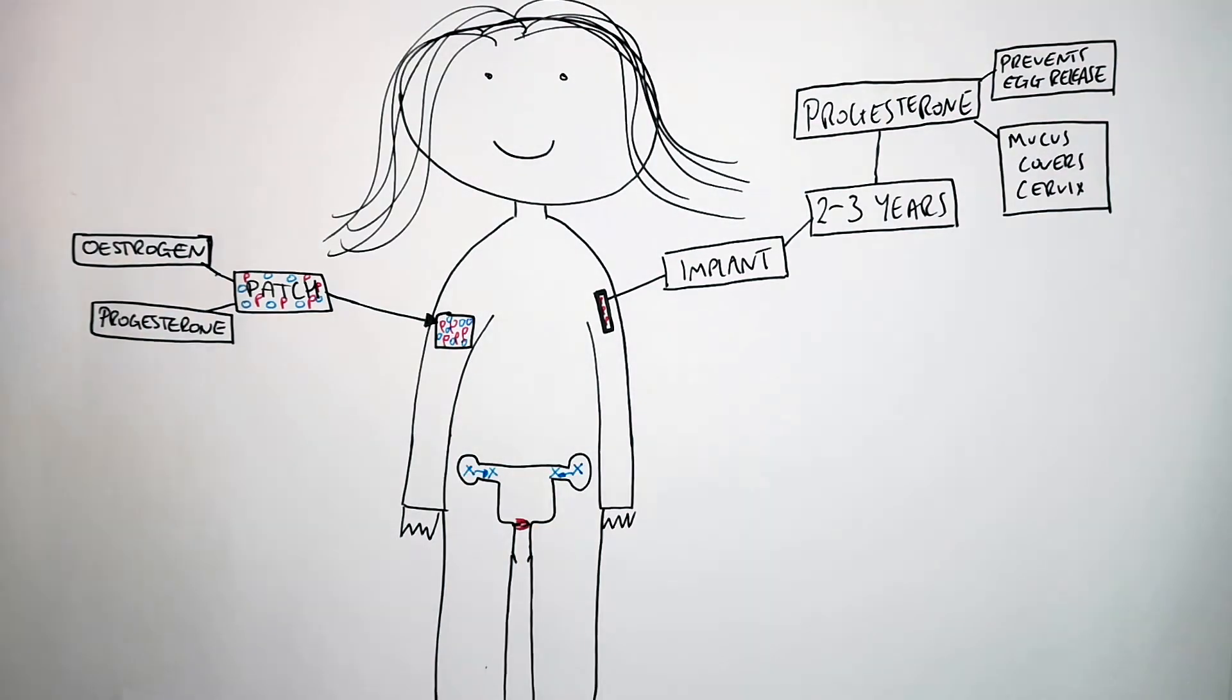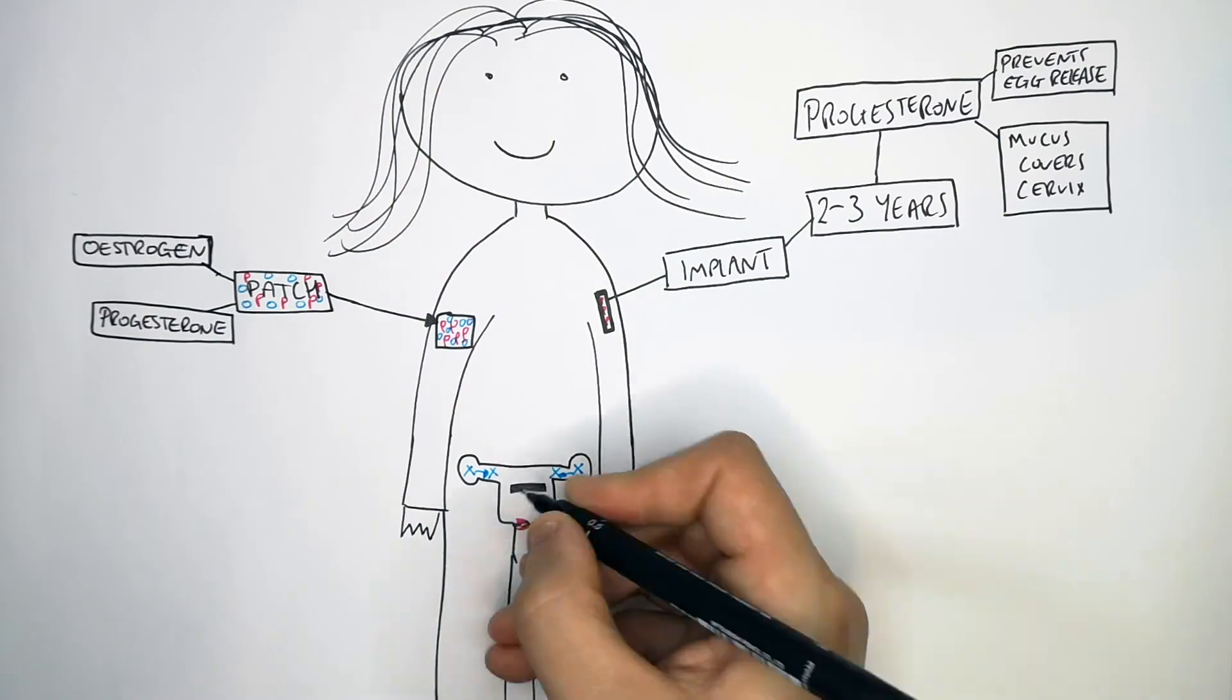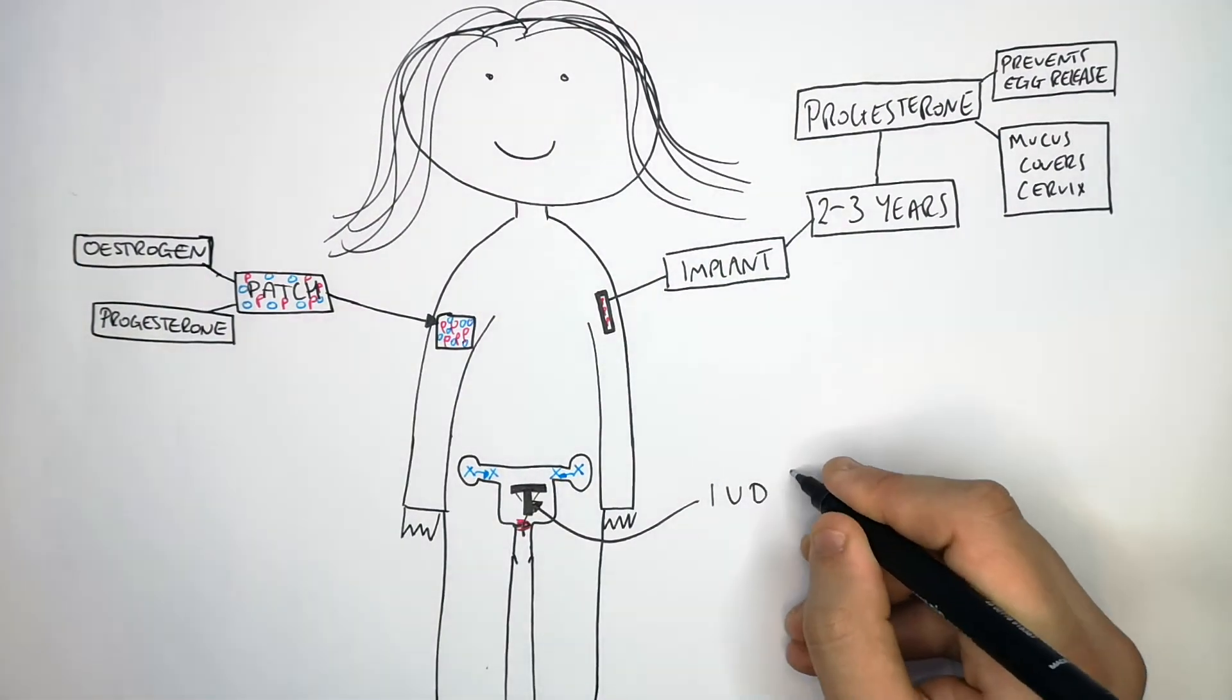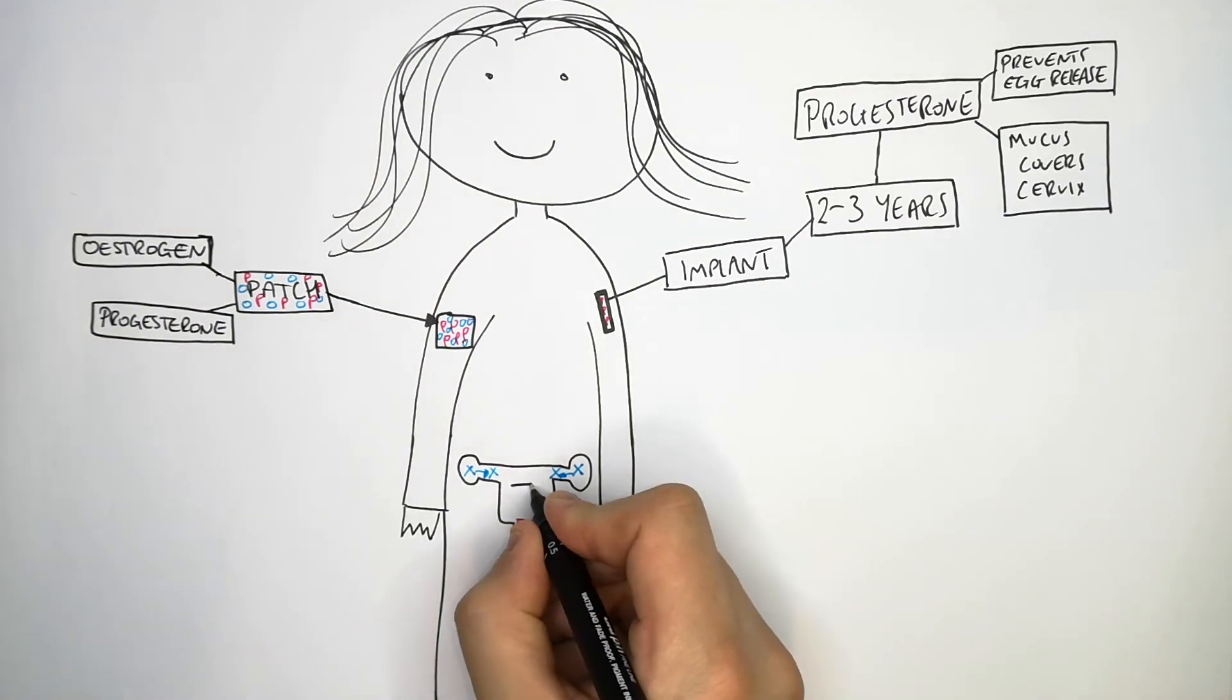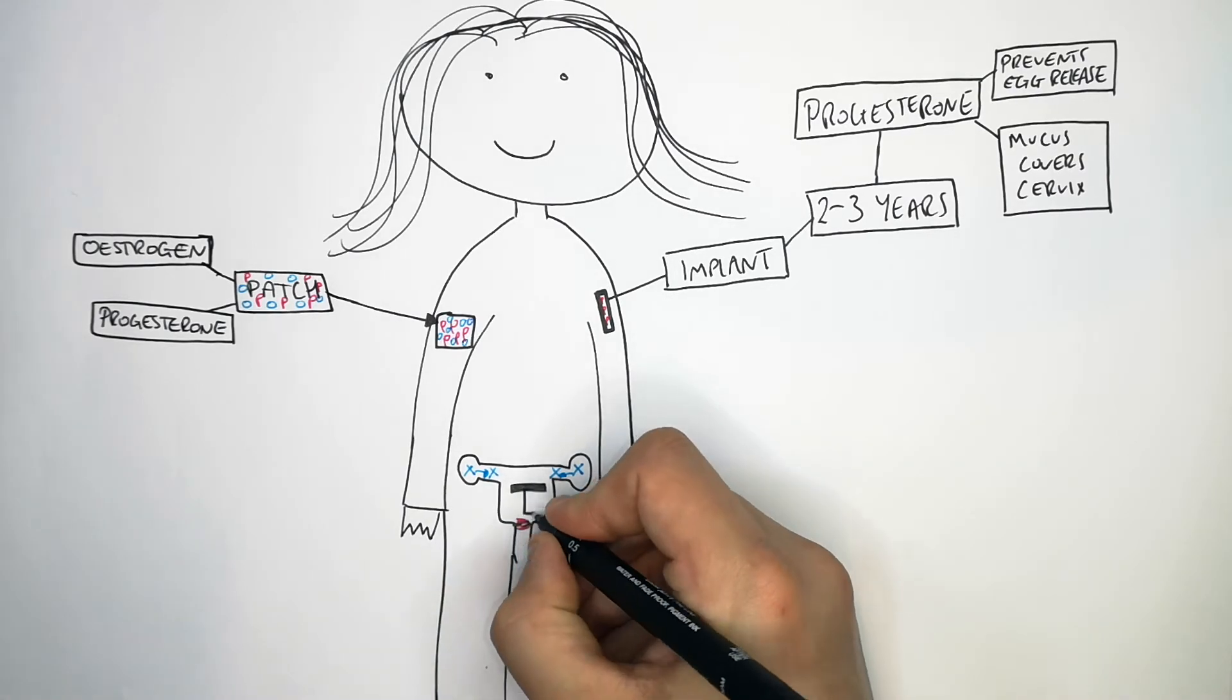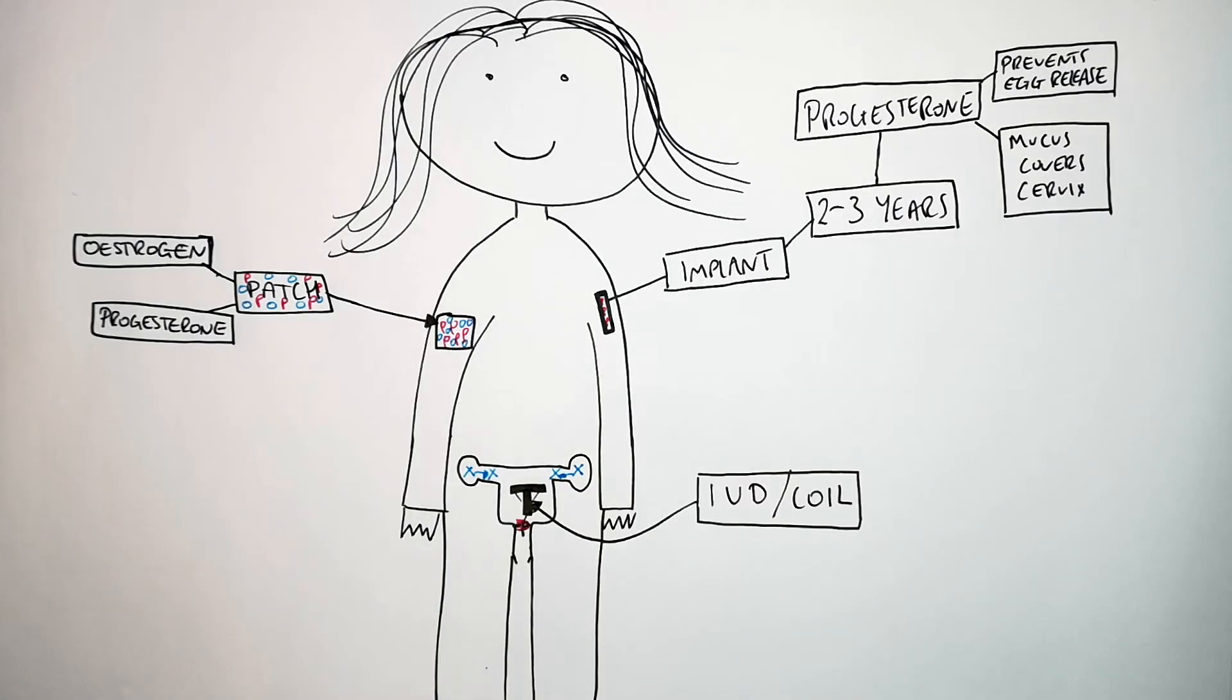Another form of contraception is the IUD, or otherwise known as the coil. It's a T-shaped object that is placed into the uterus of a female. It is not a coil shape. The IUD or coil exists in two forms.